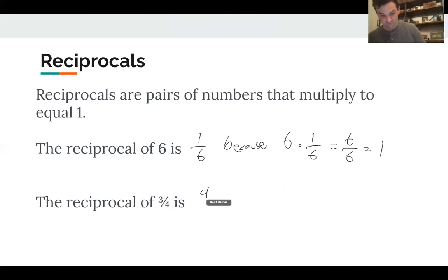Here's another one. The reciprocal of three-fourths is four-thirds. And why would that be? Because three-fourths times four-thirds equals, well, there's a couple ways to do this, but we can say twelve-twelfths, right? Because the numerators multiply to 12 and the denominators multiply to 12. And any number over itself is one.